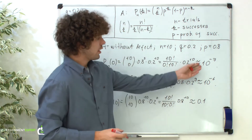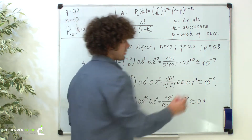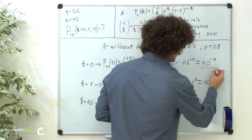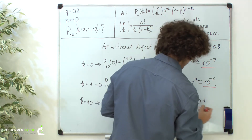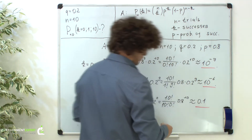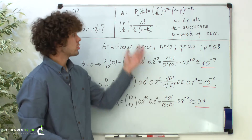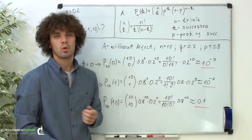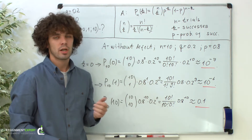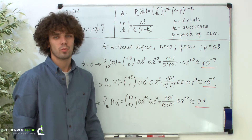So here we found 3 probabilities. That's another example on how to use the Bernoulli formula. Thanks for watching, subscribe to our channel, and see you soon. Goodbye.